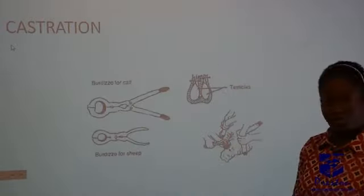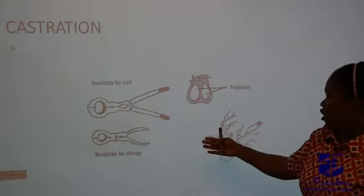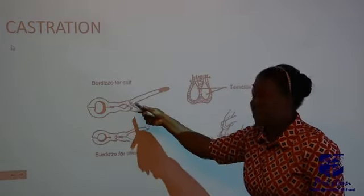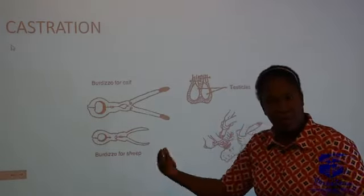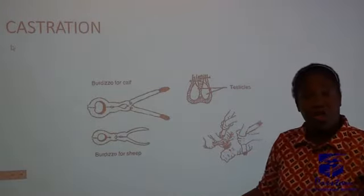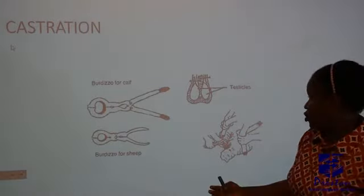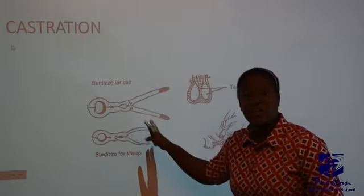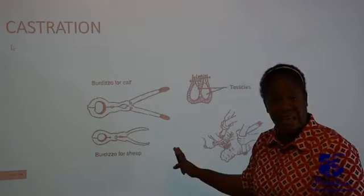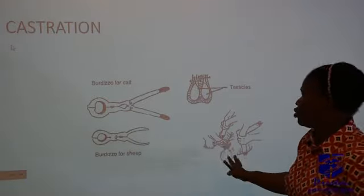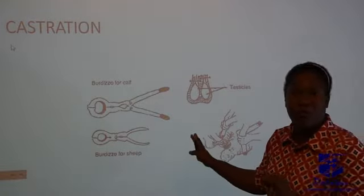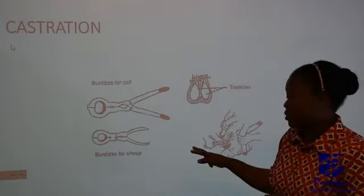The next one is castration. Here you have the castrator. We have two ways in which you can castrate your animals: you can use a Burdizzo and you can use a sharp razor blade to do that. This is majorly used for animals with a dangling reproductive organ, majorly in cattle. It's an important practice that you need to perform for your farm animals to make them docile.